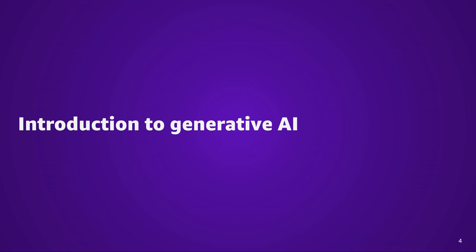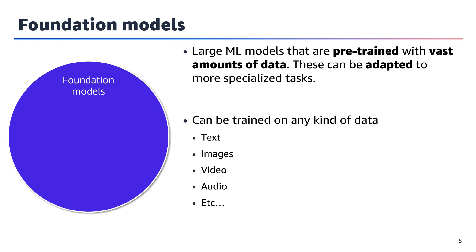Foundation models are large machine learning models that are pre-trained with vast amounts of data. These models can be adapted to more specialized tasks across various domains. Their versatility allows them to be trained on any kind of data, including text, images, video, audio, and more.